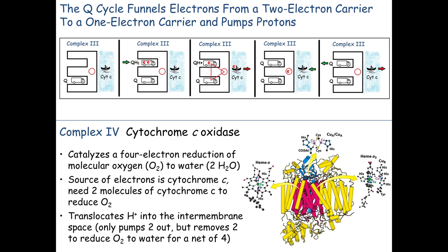The cytochrome C canoe delivers its one electron to Complex IV, comes back empty, and picks up the other remaining electron. Once both electrons are delivered, both trucks are empty and can leave. A new fully-loaded QH2 truck arrives and the cycle repeats. The key insight is that two trucks can dock at once, giving multiple places to store the unpaired electron while the canoe makes its delivery.